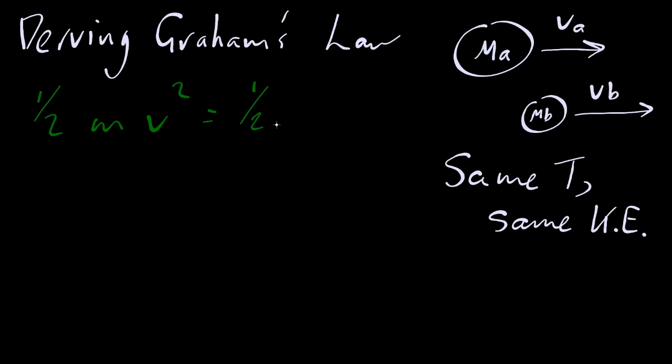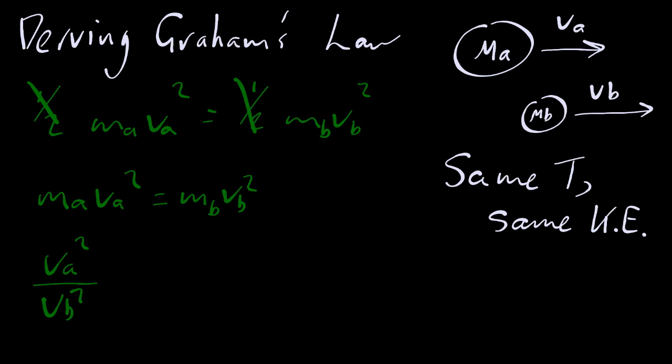So kinetic energy, half mv squared for A and half mv squared for B, those have to be the same if the temperature is the same. Cancel the halves and do a little rearranging, putting the mass on one side and the velocity on the other.